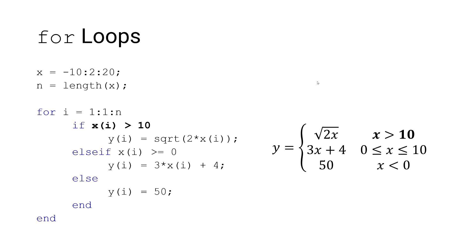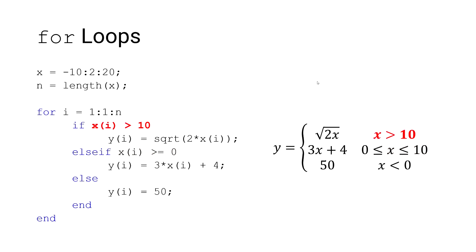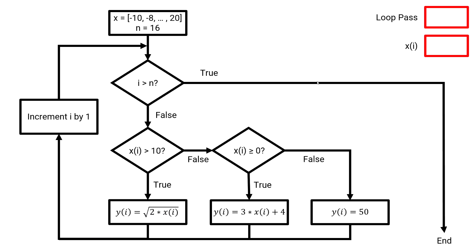If our current value of x is greater than 10, then y is evaluated as the square root of 2 times x. Else if x is greater than or equal to 0, then y is evaluated as 3 times x plus 4. Notice we only checked if x was greater than or equal to 0, and not if x was less than or equal to 10. The reason is that we already know x is not greater than 10 from our initial if statement. Finally, we get to our else statement: if x is less than 0, then y is equal to 50, and that's the end of our for loop.